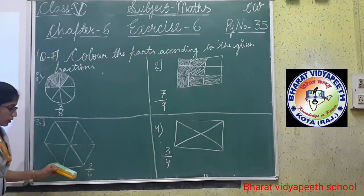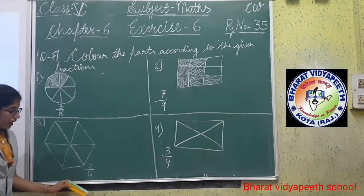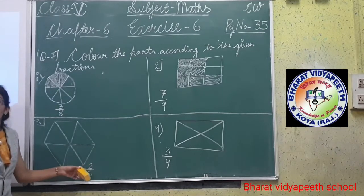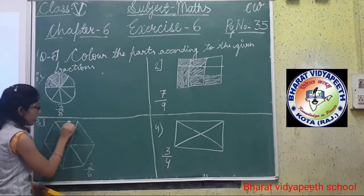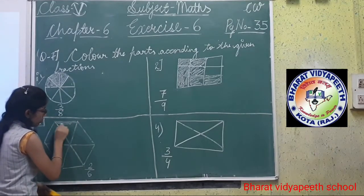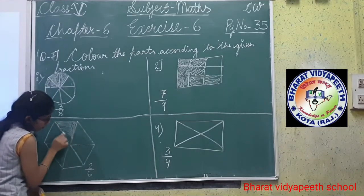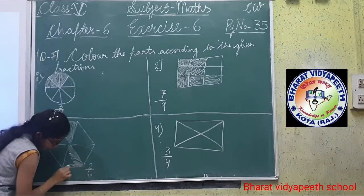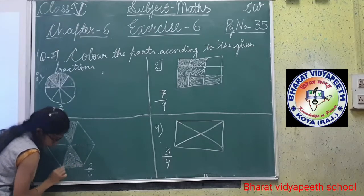Now see the third one: 2 by 6. The total number of parts is 6 and we shade 2 parts. You may shade any two parts. Clear?